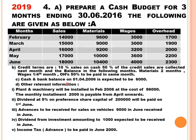Cash and bank balance on 1st April 2016 is expected to be Rs. 6,000, which is the opening cash for April. Other relevant information: plant and machinery will be installed in February 2016 at a cost of Rs. 96,000, with a monthly installment of Rs. 2,000 payable from April onwards — so Rs. 2,000 each for April, May, and June. Dividend at 5% on preference share capital of Rs. 2 lakh will be paid on 1st June, giving a payment of Rs. 10,000 in June.